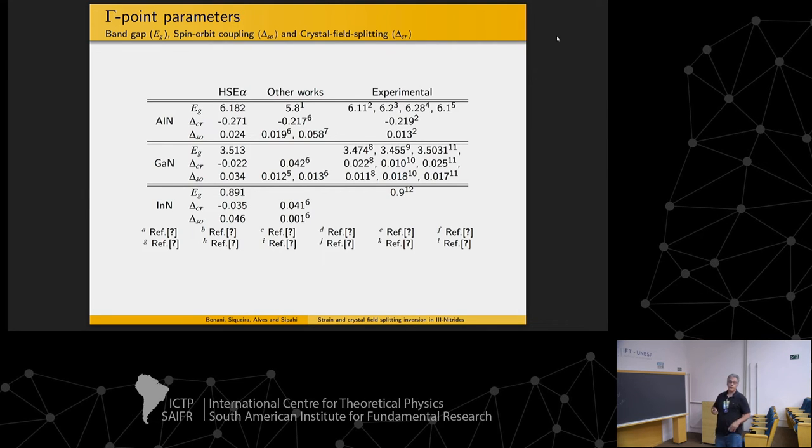So now let's look to electronic parameters. So our electronic conditions here. So the gap, we have a gap that's very close to the experimental ones. The crystal field splitting is close, not that close, but close to the experimental ones. And the spin-orbit splitting is also in the same order in the three materials.